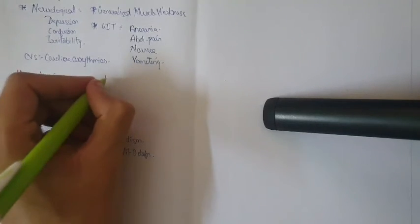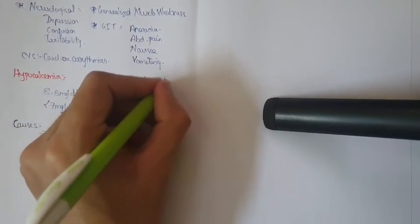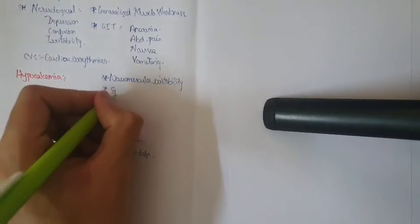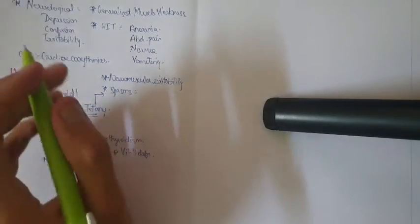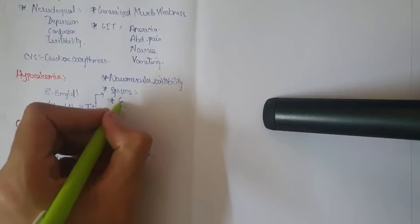Clinical features of tetany: first, neuromuscular irritability. Apart from that, you get spasms — mainly laryngeal spasms can cause death. Next, convulsions and muscular cramps. In ECG changes, mainly the QT interval will be increased.